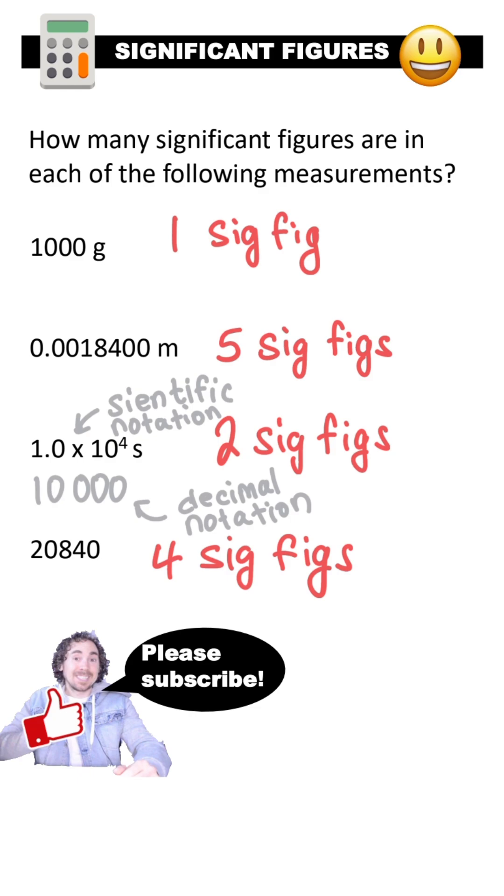The fourth measurement has four significant figures. The non-zero digits and captive zeros are significant, but the trailing zero is not significant because there is no decimal.